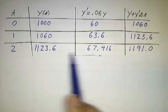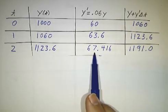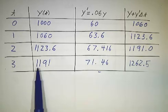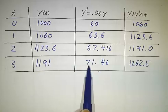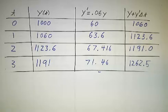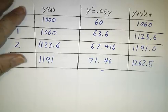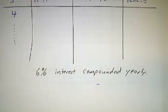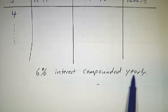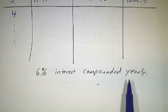The year after, it's growing at a rate of 67.4, and we wind up with $1,191. The year after, it's growing at a rate of 71.4, and we wind up with $1,262. And we could keep going as long as we liked. And what we've done is we've done 6% interest compounded yearly. Every year we take stock and recompute the rate at which we're making money. And that'll give us a pretty good approximation to our difference equation. But it's not exact.